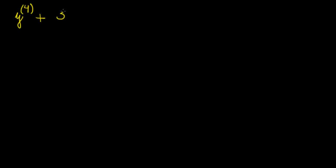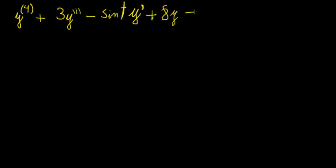Let's say you're given a fourth order differential equation — so far we haven't really dealt with differential equations higher than order 2, so this will be an interesting example. The equation is: 3 times the third derivative of y, minus sine(t) times y prime, plus 8y equals t squared. This is interesting because not only do we have a non-constant coefficient, we also have a non-homogeneous equation with a function of t on the other side. The easiest way to solve this is to represent it as a system of first order differential equations, and because the highest order is 4, we're going to have a 4 by 4 matrix with four solutions.